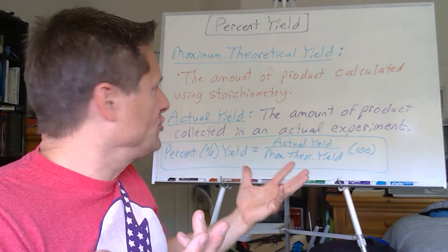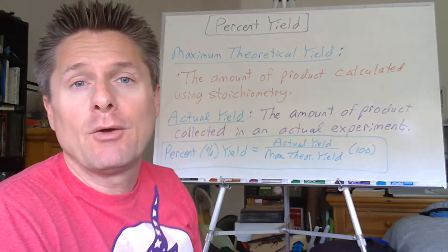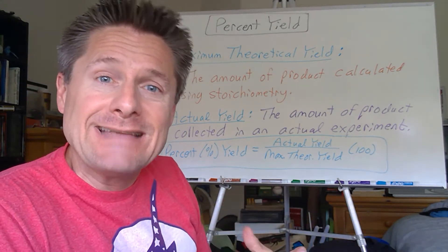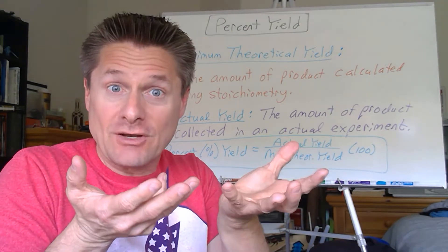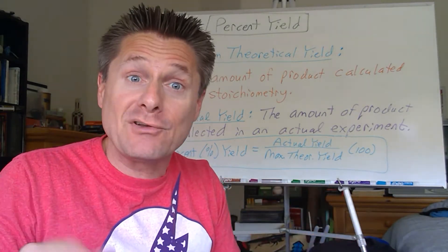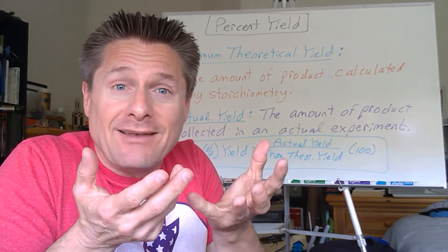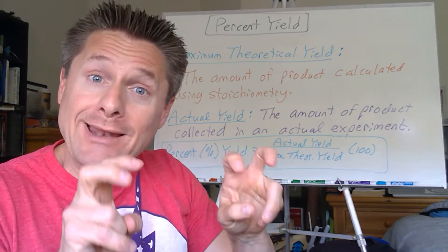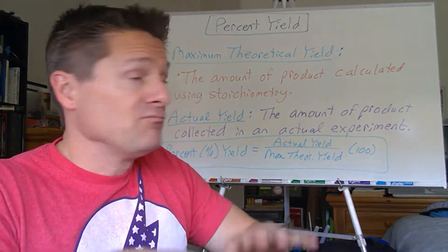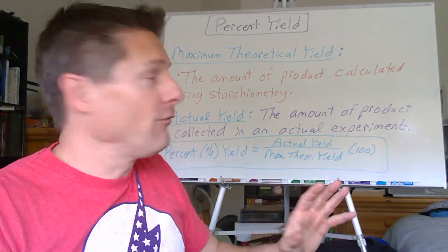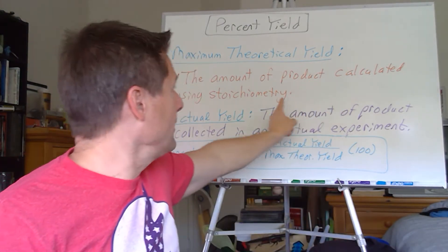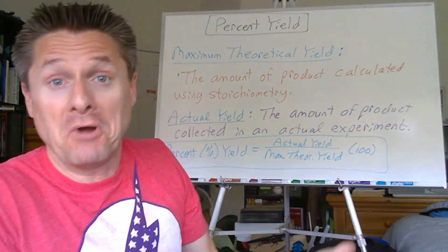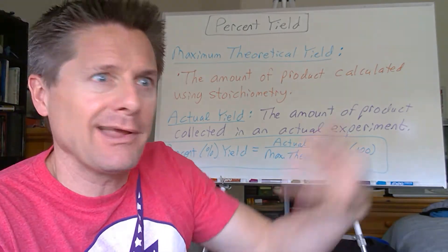Here's the two terms we'll use. Maximum theoretical yield is when you theoretically take an equation, you haven't run it in lab. You're just saying if I've got this much reactants, how much product can I get theoretically? In a perfect world, how much product can form? What you calculate stoichiometrically is the maximum theoretical yield.